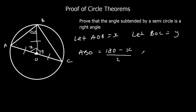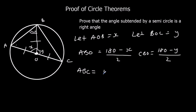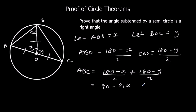So angle ABC is these two added together: (180 − X)/2 + (180 − Y)/2. Simplifying: 90 − X/2 + 90 − Y/2, which gives 180 − X/2 − Y/2. Over on the other side we have X + Y.